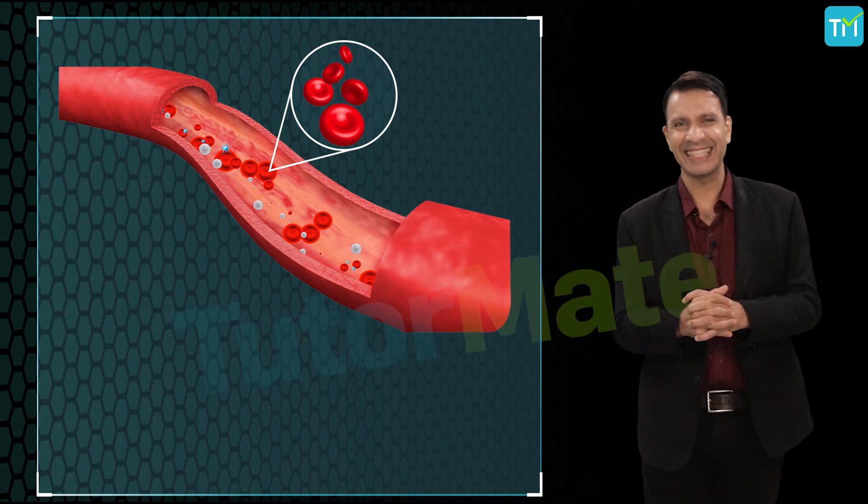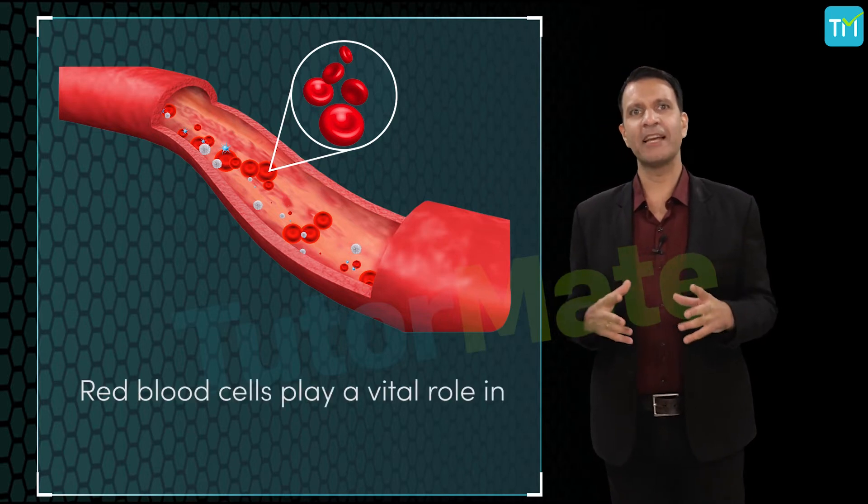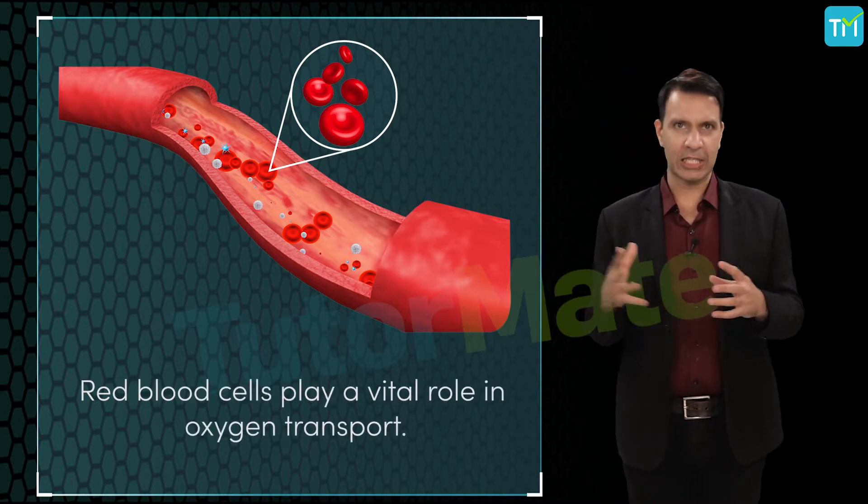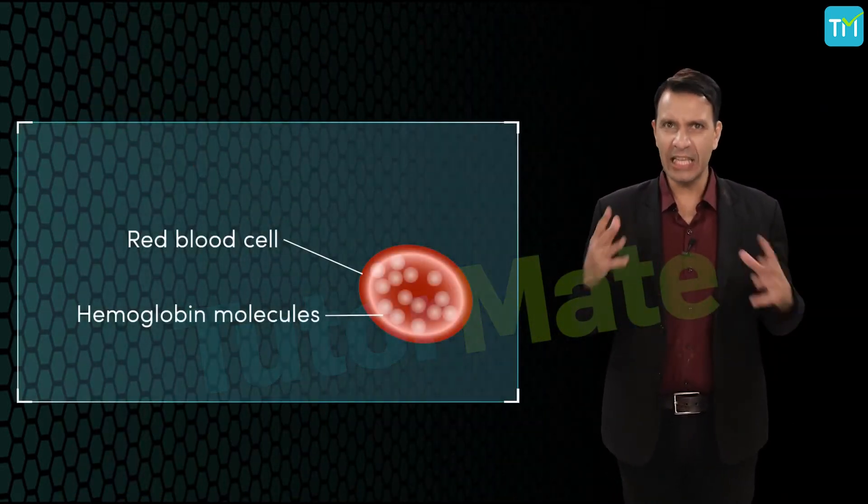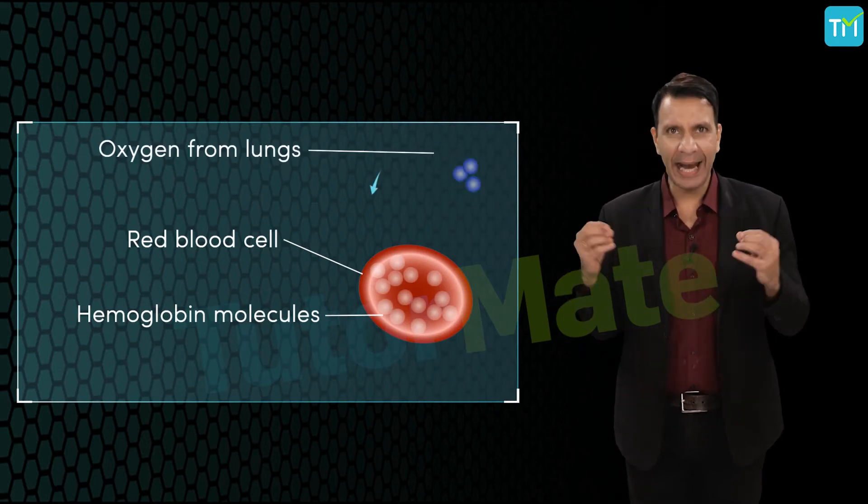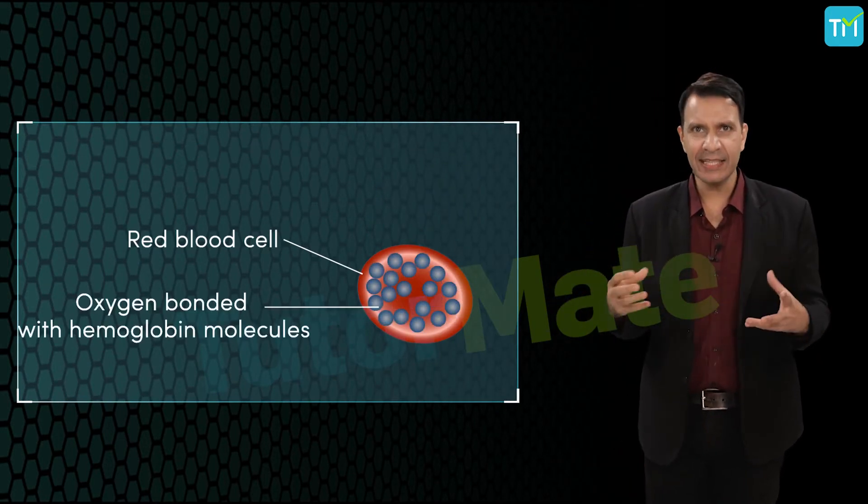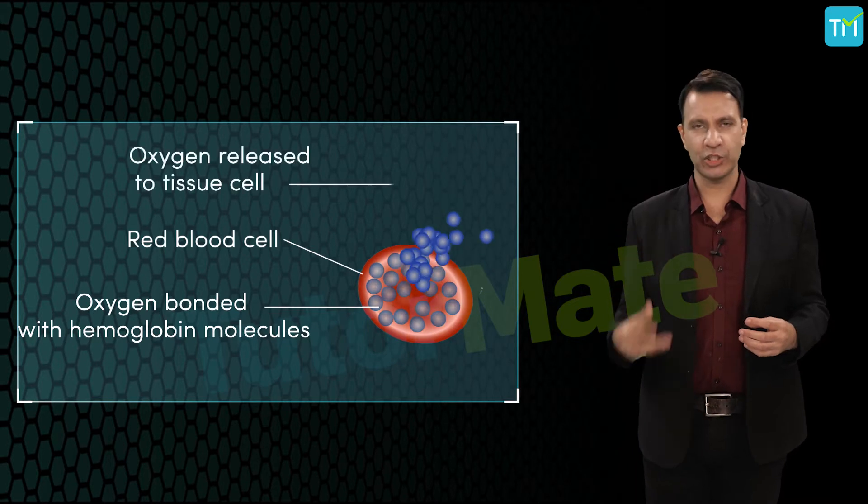Now red blood cells play a vital role in oxygen transport. The hemoglobin present in it binds with the oxygen and carries it from the lungs to the body tissue.